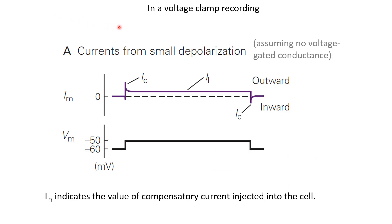Imagine a voltage clamp experiment on a neuron whose resting membrane potential is around -60 mV. We let the neuron sit at -60 mV initially, then at some point clamp the voltage to -50 mV — the membrane potential suddenly steps from -60 to -50. We keep the command potential at -50 mV for a certain duration and then bring it back to -60 mV. So this is the profile of the command voltage: a step from -60 to -50 for a certain duration, then returned to -60.